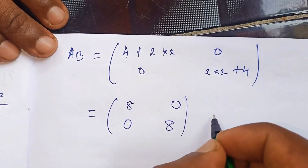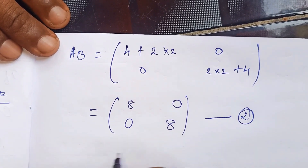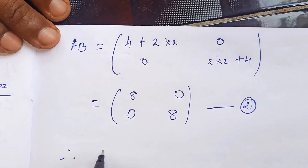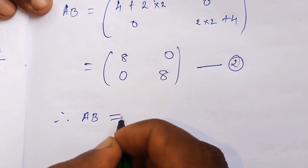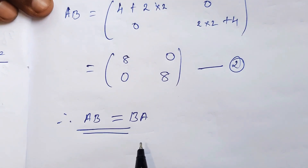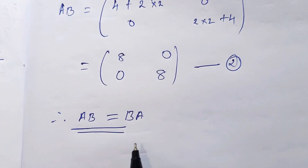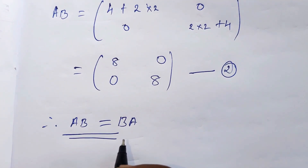Therefore AB = BA, which is equation 1 equal to equation 2. This proves the commutative property of matrix multiplication for the given matrices A and B.